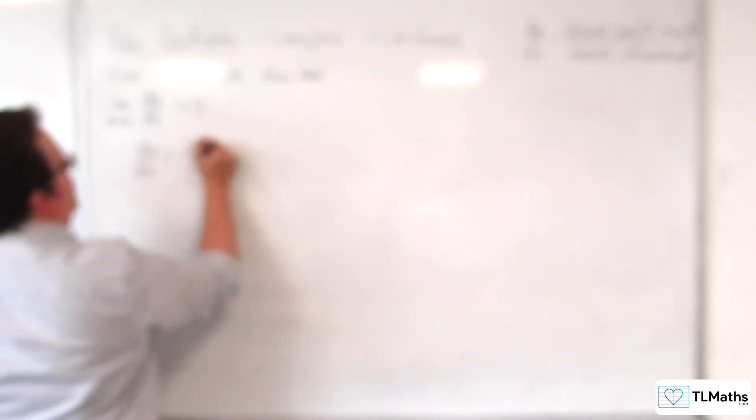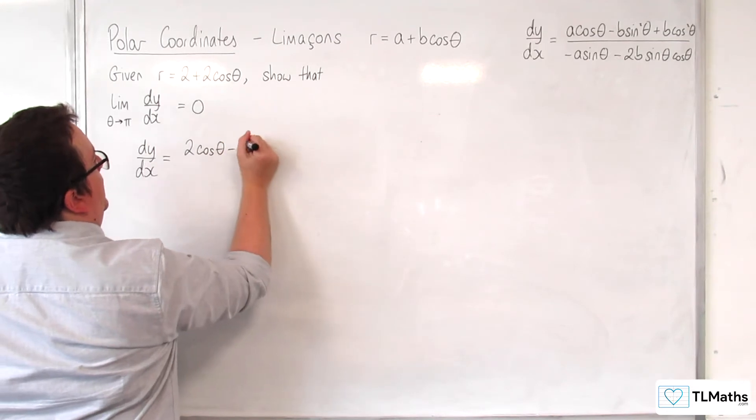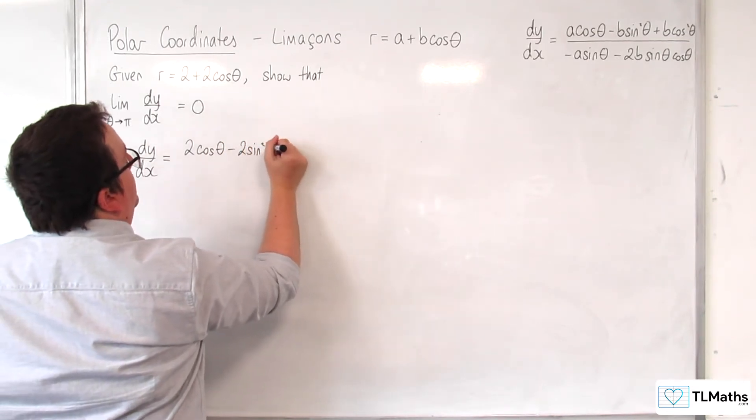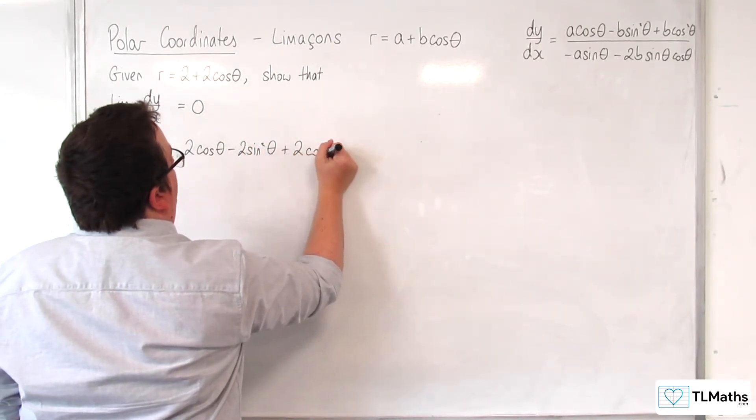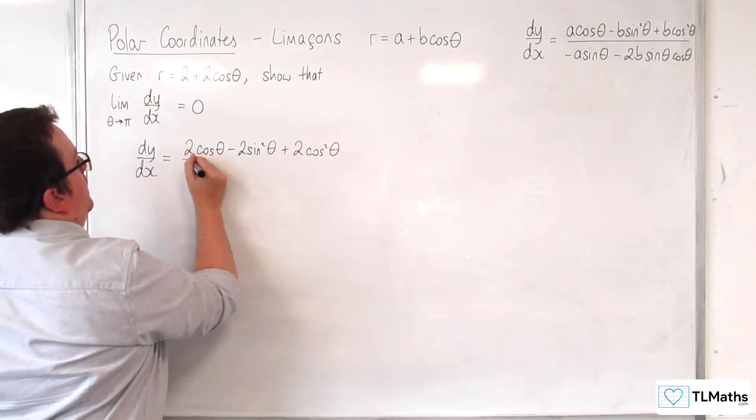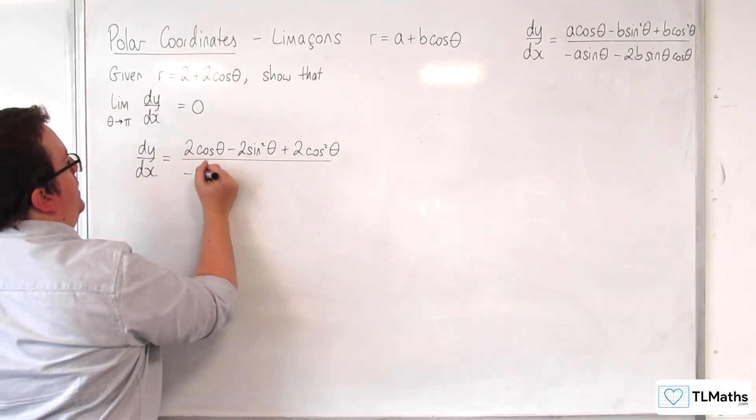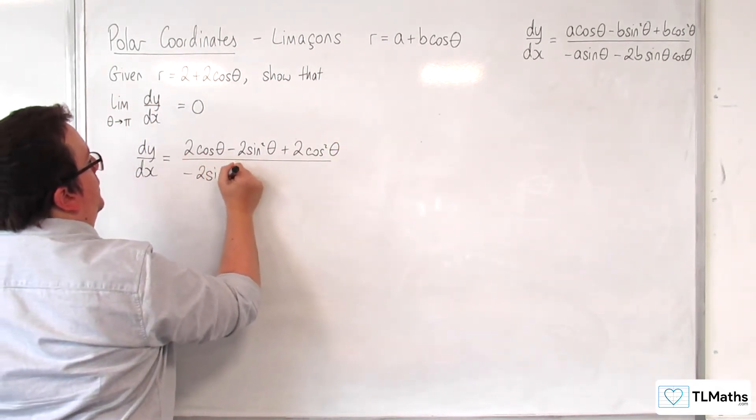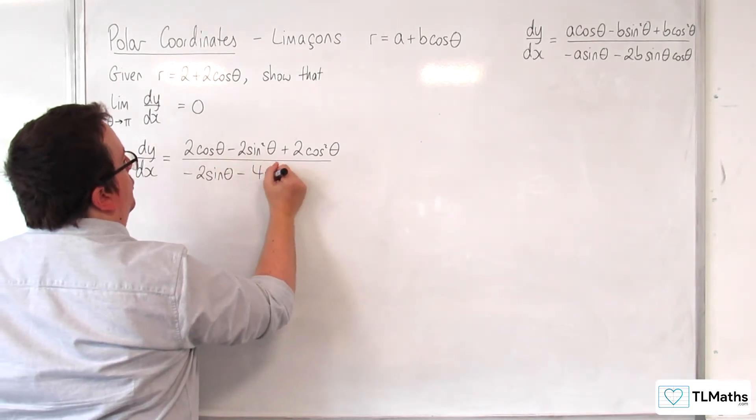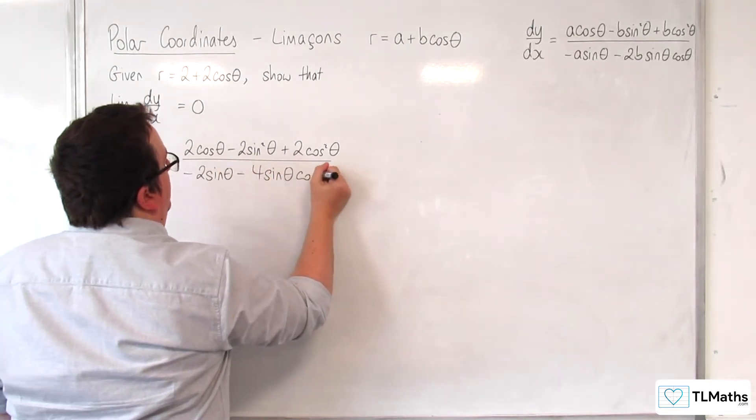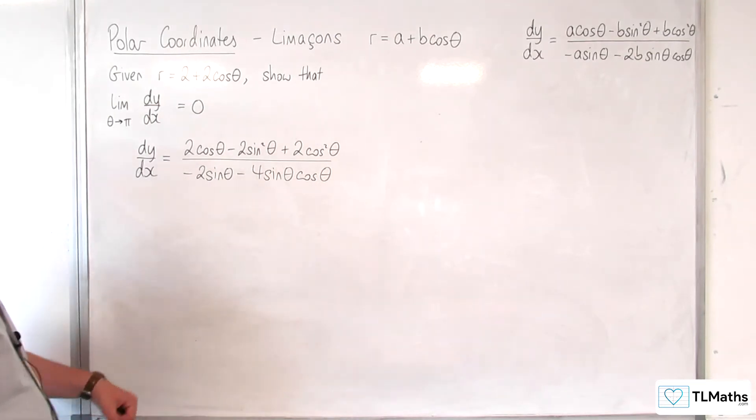So we're going to have 2 cosine theta take away 2 sine squared theta plus 2 cosine squared theta over minus 2 sine theta take away 4 sine theta cosine theta.